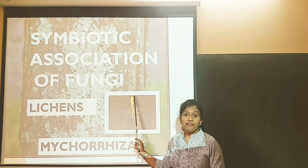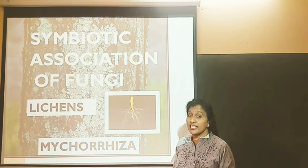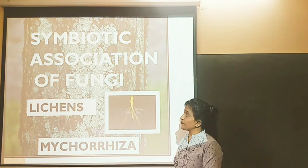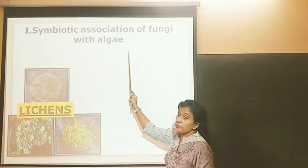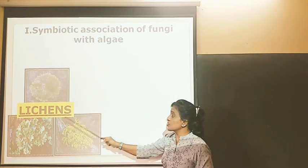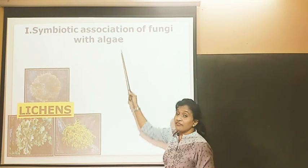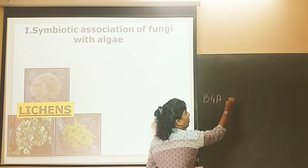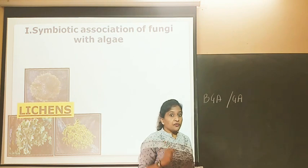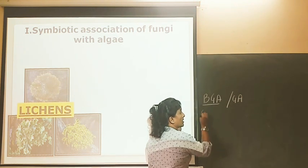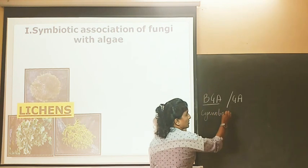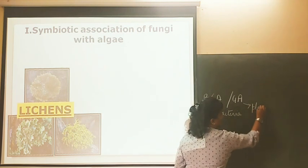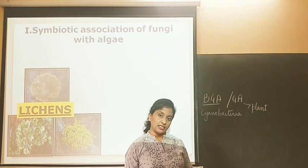Fungi have mutual interaction or symbiotic association with the roots of higher plants and also with the algae. When fungus has intimate interaction with the algae, it is called as lichens. The algae can be either blue-green algae or green algae. We should recall that blue-green algae are cyanobacteria coming under kingdom Monera, and green algae come under kingdom Plantae.